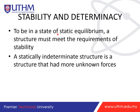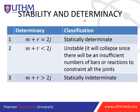We have two types: statically determinate and statically indeterminate. A statically indeterminate structure has more unknown forces than equilibrium equations — normally three unknowns for three equilibrium equations, but four unknowns means one extra. The determinacy equation is: m + r = 2j, where m is the number of members, r is the number of reactions, and j is the number of joints. When m + r = 2j, the truss is statically determinate. When m + r < 2j, the truss is unstable and will collapse. When m + r > 2j, it is statically indeterminate.